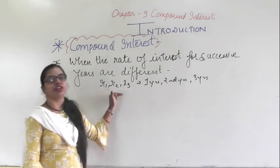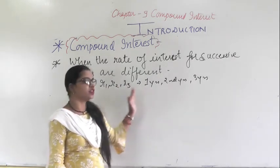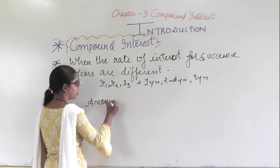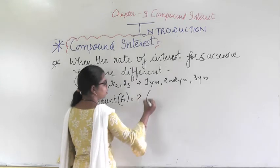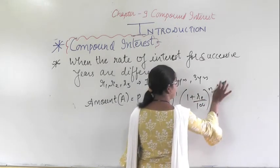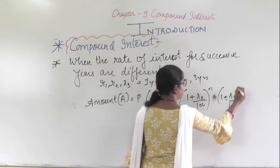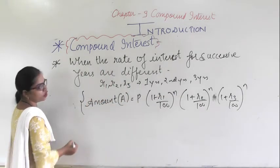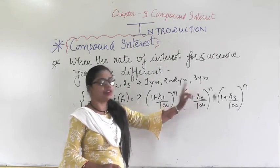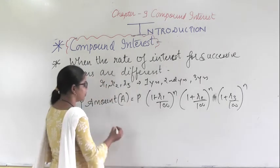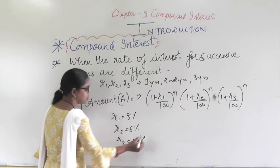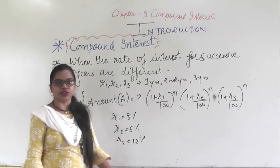When the rate of interest for successive years is different — R1, R2, and R3 — the formula for Amount becomes: A = P × (1 + R1/100) × (1 + R2/100) × (1 + R3/100). For example, if R1 = 5%, R2 = 6%, and R3 = 12%, the rate changes each successive year.